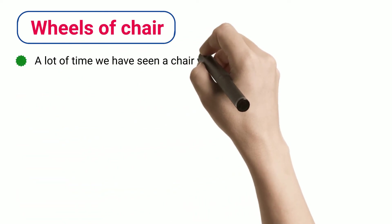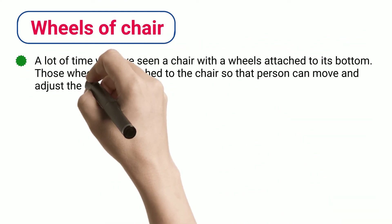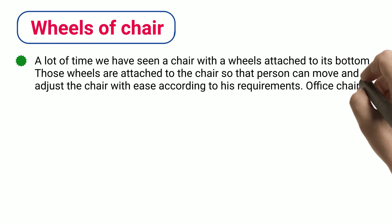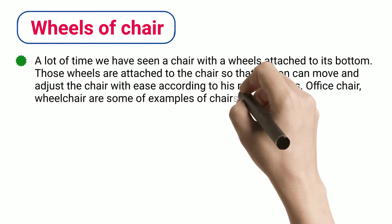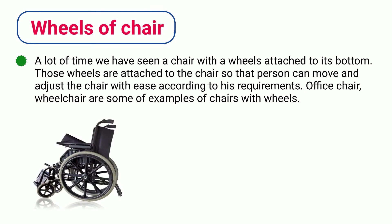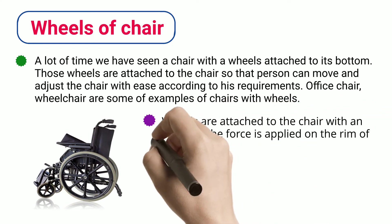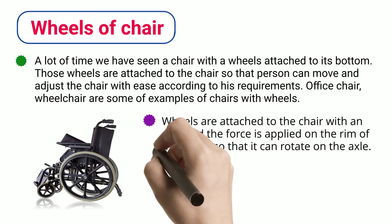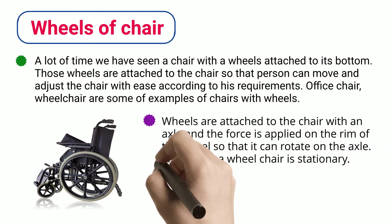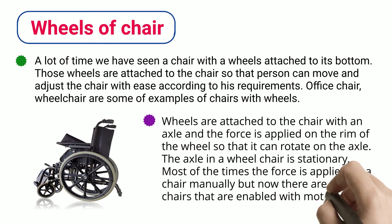Wheels of a Chair. We have often seen chairs with wheels attached to their bottom. Those wheels are attached to the chair so that a person can move and adjust the chair with ease according to their requirements. Office chairs and wheelchairs are some examples. Wheels are attached to the chair with an axle, and force is applied on the rim of the wheel so that it can rotate on the axle. The axle in a wheelchair is stationary. Most of the time the force is applied manually, but now there are some chairs enabled with motors.